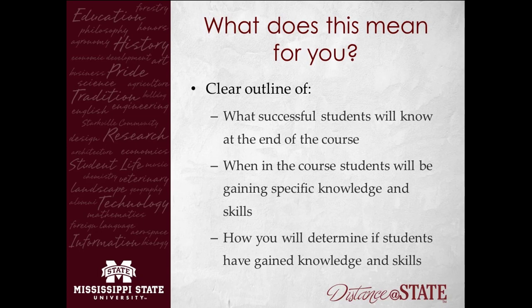Here's what this means for us as teachers. You have to provide for your students what a successful student will be able to know or do at the end of the course. You should provide when in the course students will be gaining specific knowledge and skills — not only overarching semester-level objectives, but individual chapter and unit objectives explaining: you're going to read this chapter, learn this section of material, and then be able to do this specific thing.